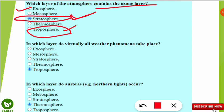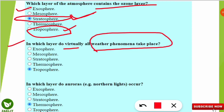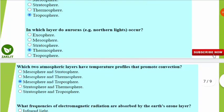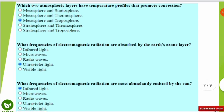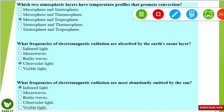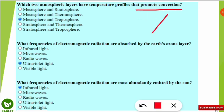All weather phenomena take place in the troposphere region. Auroras — also called the northern lights — occur in the thermosphere region of the atmosphere. The two atmospheric layers whose temperature profiles promote convection are the mesosphere and the troposphere. These are important frequently asked questions in the examination, so please note them down.